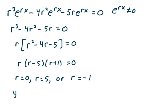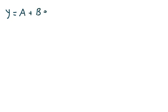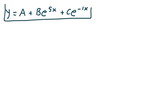Here are my three linearly independent solutions: y sub 1 equals e to the 0, which is 1; y sub 2 equals e to the 5x; and y sub 3 equals e to the negative x. Therefore, my general solution y is a plus b e to the 5x plus c e to the negative x.